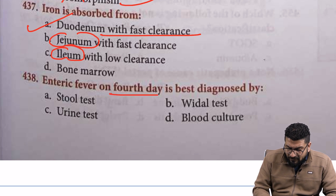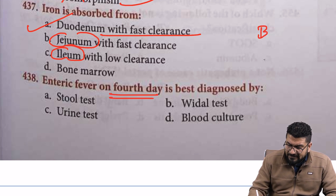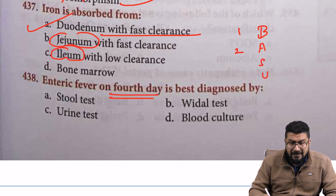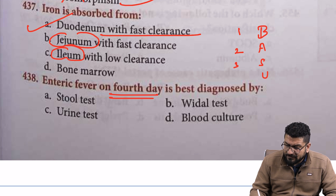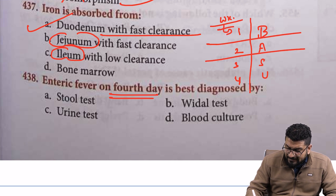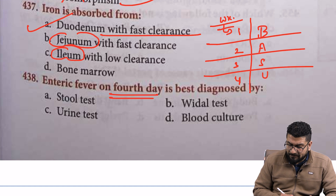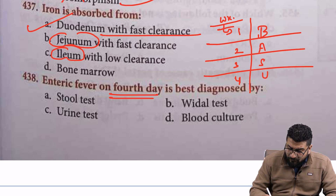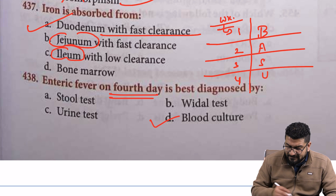Enteric fever — they are asking about the fourth day. How do we diagnose enteric fever? By the weekly schedule: first week — blood test (blood culture); second week — agglutination test, we call this the Widal test; third week — stool test; fourth week — urine test. These are in weeks, not in days. Remember the mnemonic BASU. Fourth day means it is in the first week, so the answer will be blood culture.